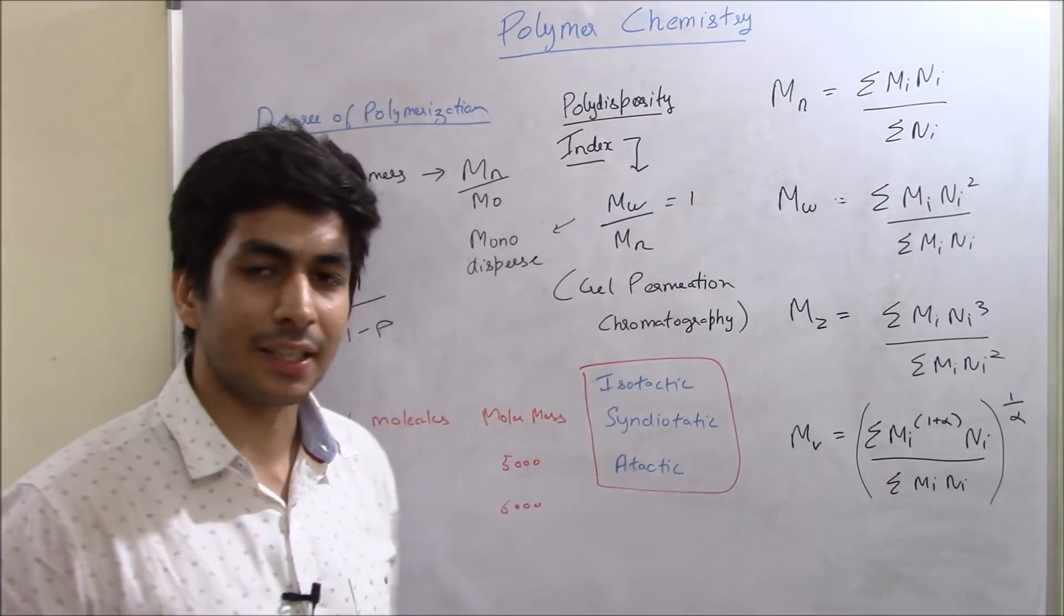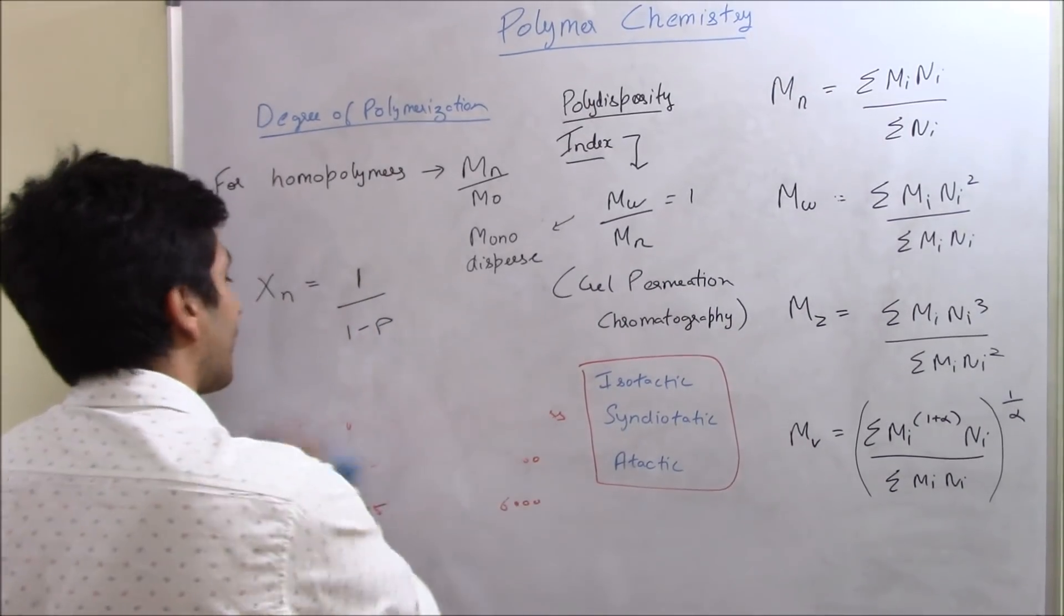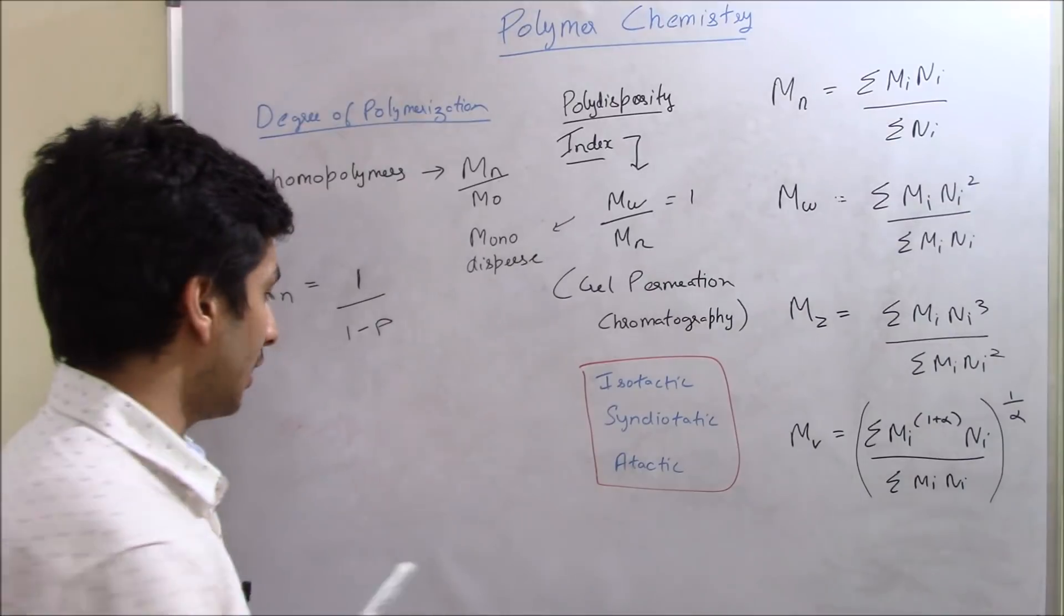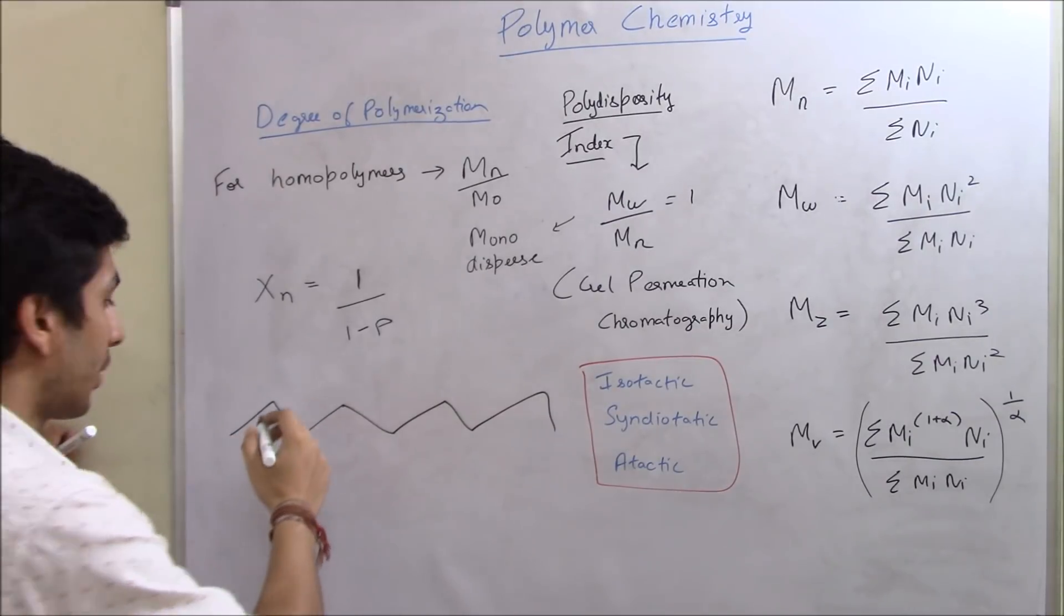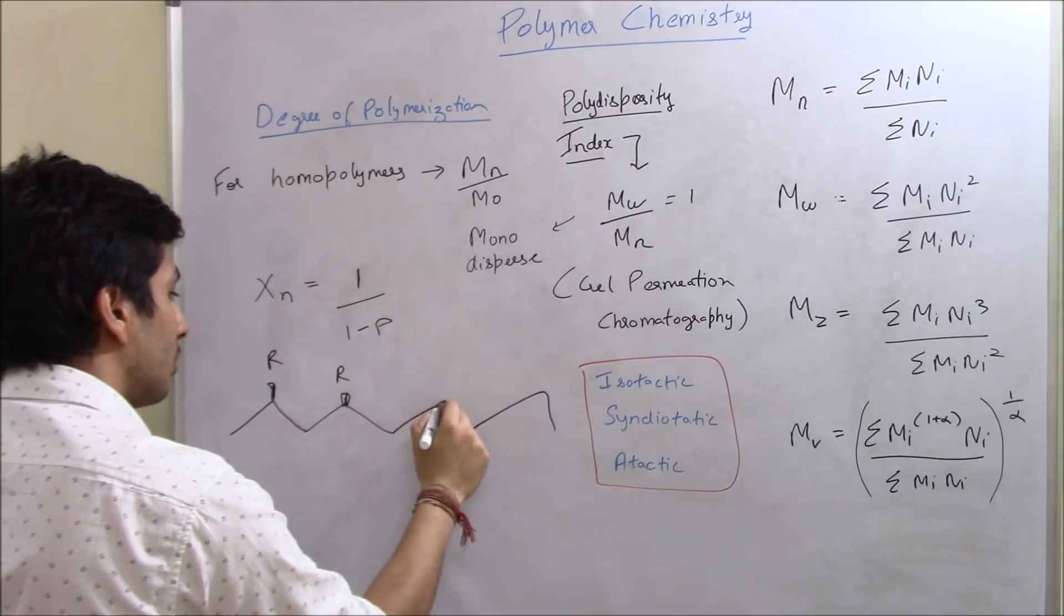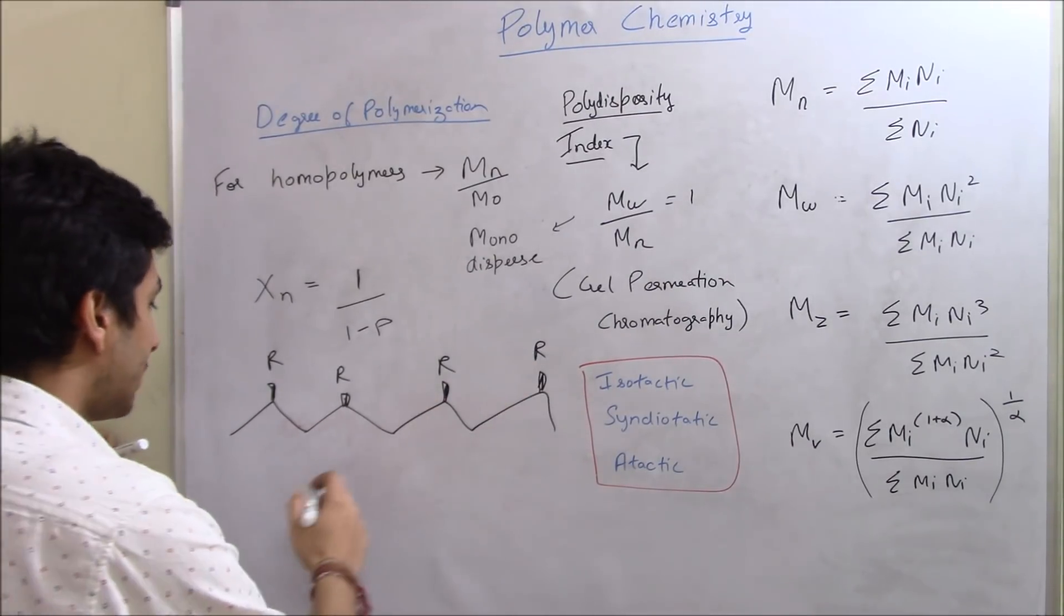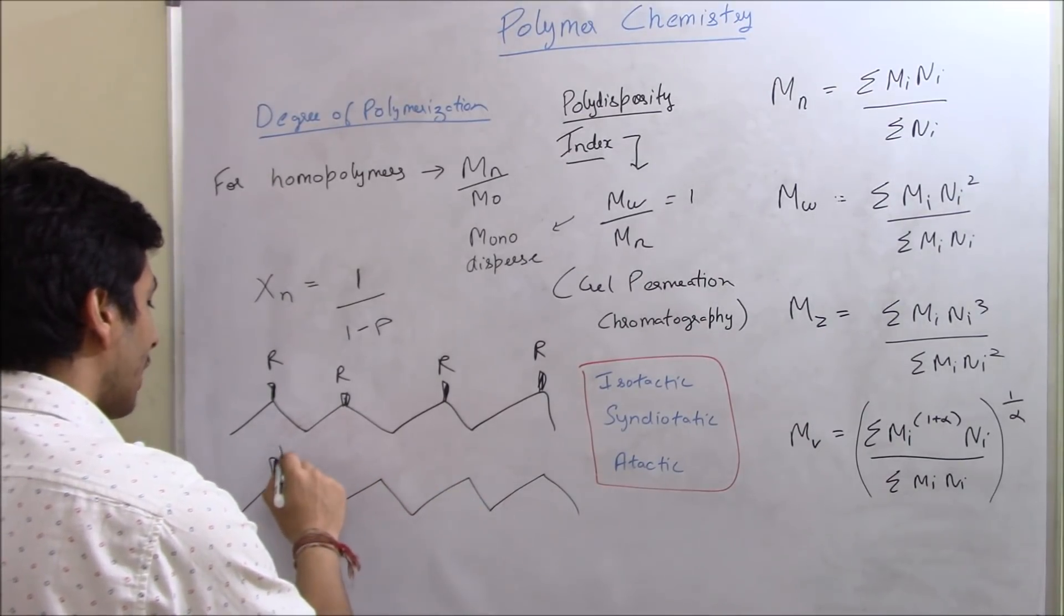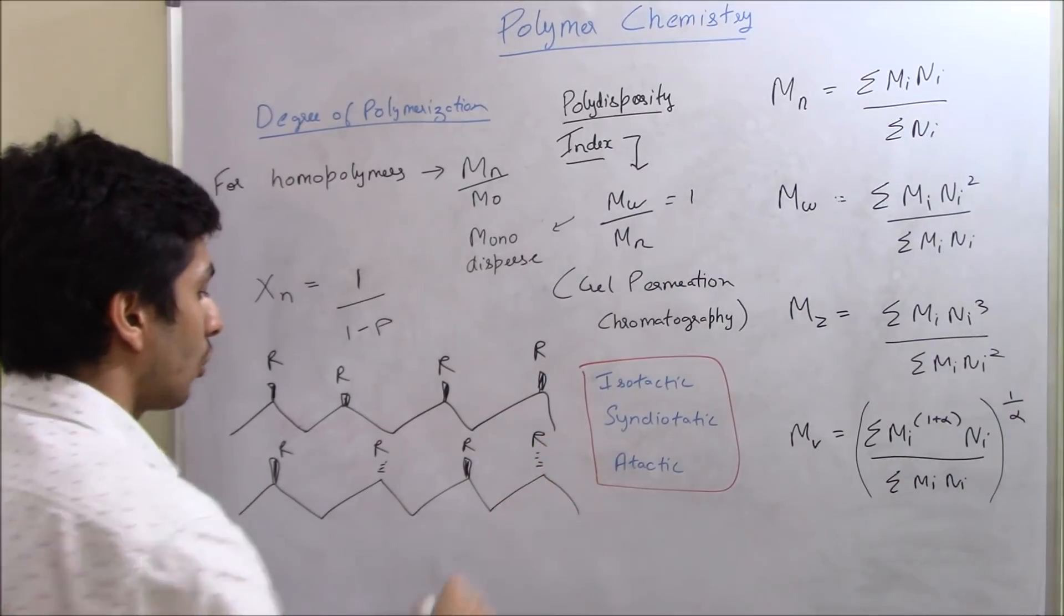I'll talk about degree of polymerization later. Then we have isotactic, syndiotactic and atactic. This is something you might have studied way back in your bachelor's. And what is this atactic, syndiotactic and atactic? So I'll just tell you isotactic. Isotactic is basically when we have the same, this is your branch, this is your polymer and we have an R group over here. Then we have an R group over here. So you can see the same repeating unit on the same side. So it's the same polymeric repeating unit on the same side. What is syndiotactic? Syndiotactic is basically same repeating unit, but the R group is on the opposite side. So like over here, we have R over here, then we have R below the plane, then we have R above the plane, then we have R below the plane. So this is called syndiotactic.